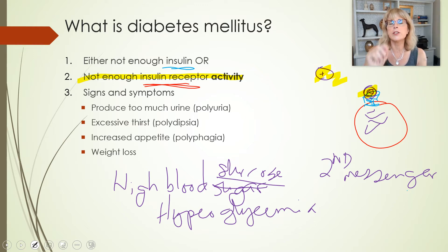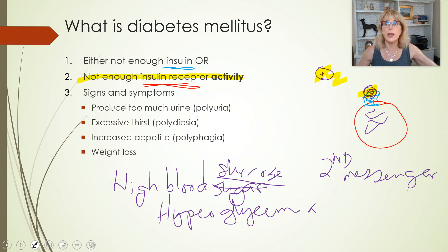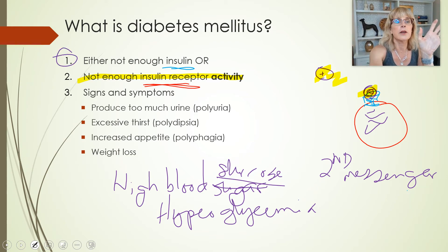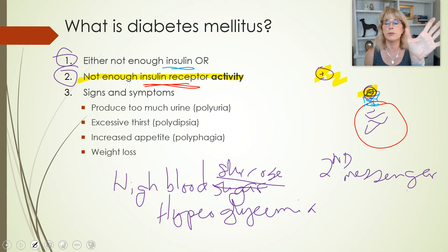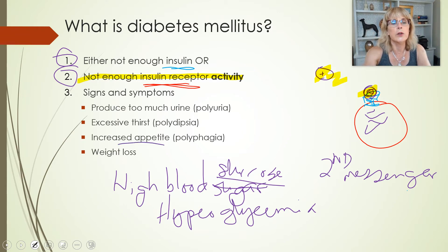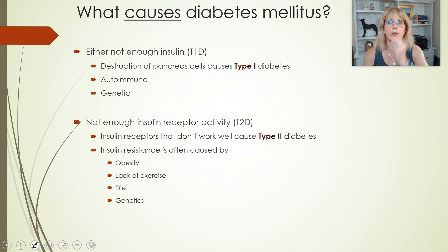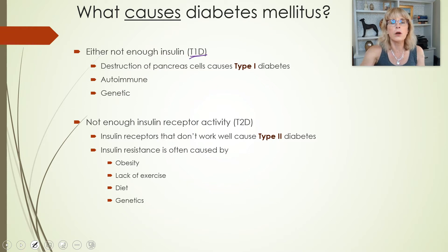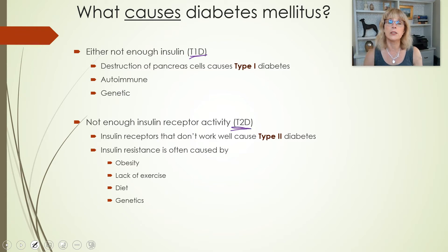There are two different kinds of diabetes mellitus: two subtypes. Type 1 — not enough insulin. Type 2 — plenty of insulin, but something's wrong with the receptors. With type 1 diabetes, you really get an increased appetite and weight loss, and type 1 diabetes is more likely to be fatal quickly. Either there's not enough insulin — that's type 1 — or there's plenty of insulin but something's wrong with the receptor — that is type 2 diabetes.